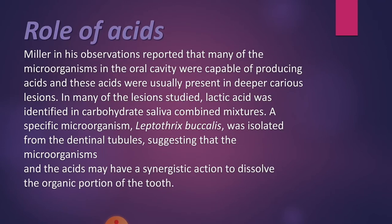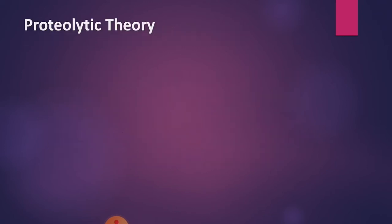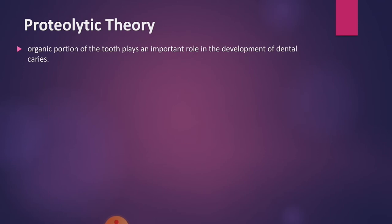Regarding the role of acids: there is a synergistic action between the microorganism and the acid — the microorganism secretes acid, and the acid dissolves the organic portion of the tooth. Regarding the role of plaque: the pH of the plaque was 7.1 in non-carious individuals but was 5.5 or below in carious individuals. This 5.5 is also known as the critical pH.